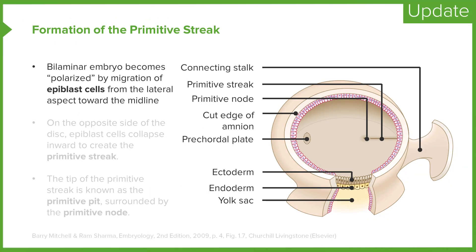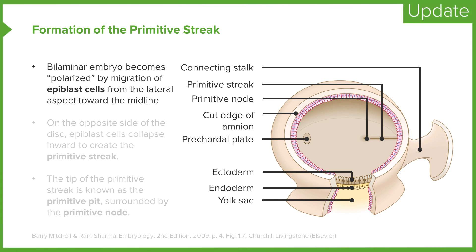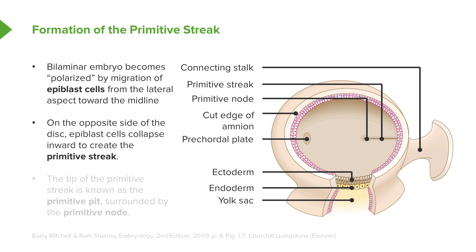The bilaminar embryo begins the process of gastrulation by becoming polarized. There is a migration of epiblast cells from the lateral aspect toward the midline. On the opposite side of the bilaminar embryo, we develop something called the primitive streak.